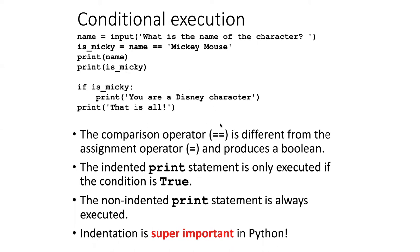An important thing to notice here is that the comparison operator — used to evaluate whether two things are equivalent — is a double equal sign (==). That's different from the assignment operator, which is only a single equal sign (=). If the value typed in was equal to Mickey Mouse, then is_mickey will be true and the if statement evaluates as true, performing the indented code block which simply prints 'You are a Disney character.' If is_mickey is false, it will not print that. In either case, the non-indented print statement is always performed regardless of whether the if statement is true or not.